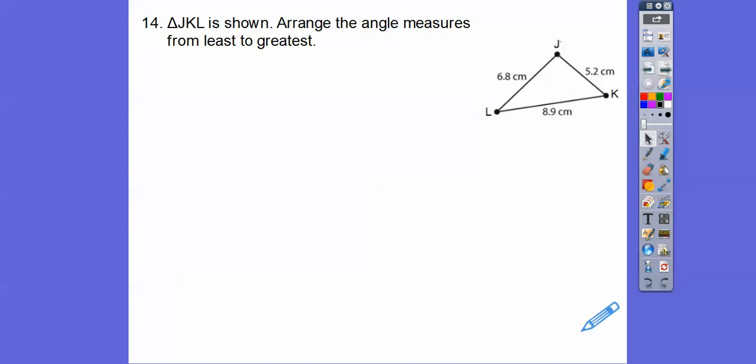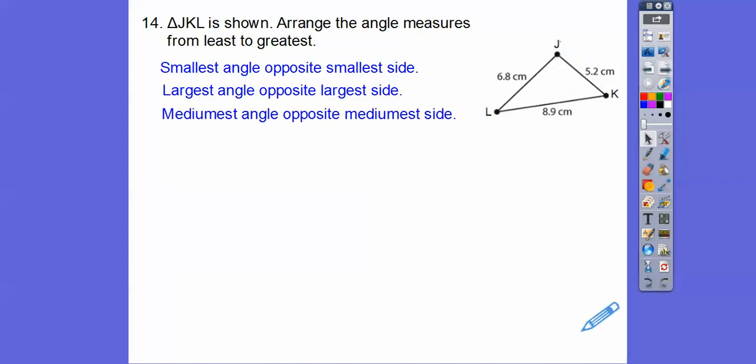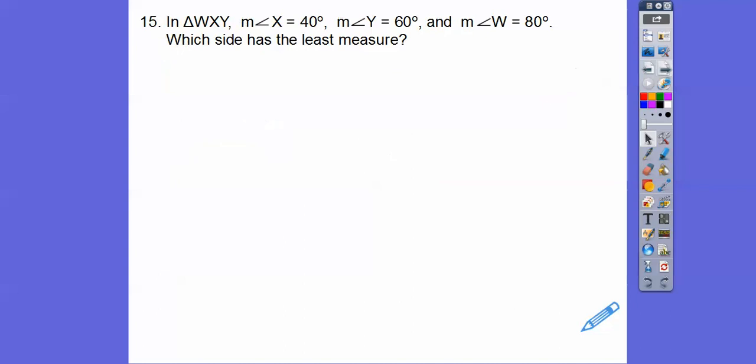Arrange the angles from least to greatest. Smallest angle is opposite the smallest side. So this is definitely the smallest side right here, so L is the smallest angle. The largest side is opposite the largest angle, so this is the biggest angle. The medium angle is opposite the medium side. So smallest angle is angle L, medium angle is angle K, and the largest angle is angle J. So there they are in order from least to greatest.